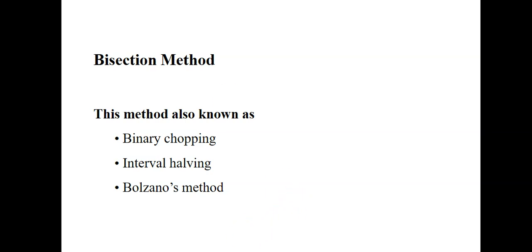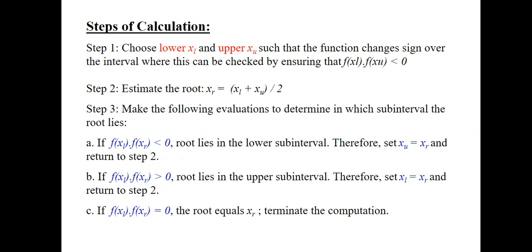These are the general steps of bisection method. We have three steps here. The first step is, if initial guesses are not given to you, because for bisection method you need to have initial guesses of your xl and xu which are bracketing the root xr that you want to predict.